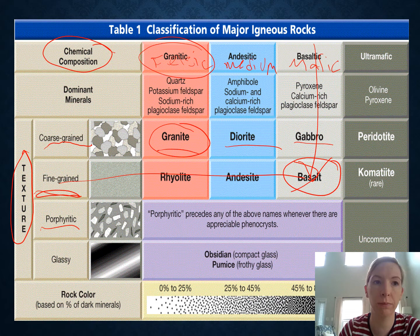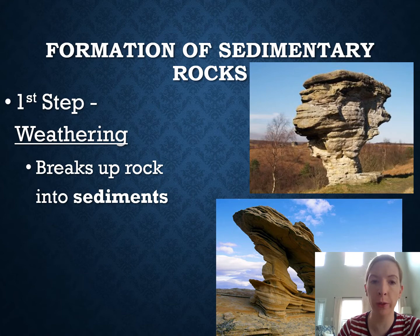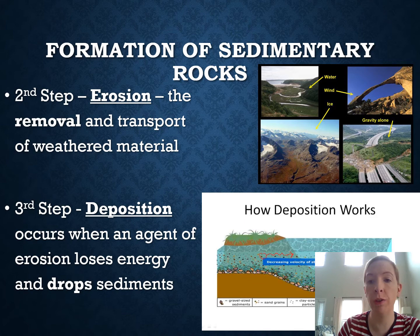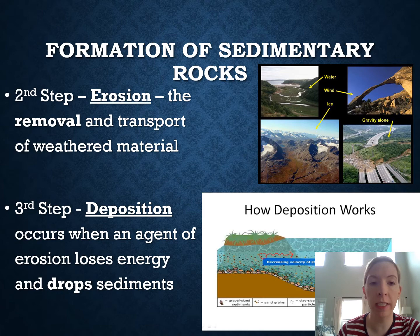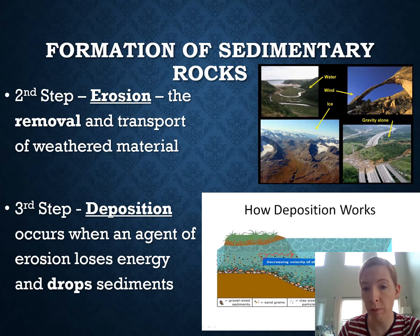Now let's look at sedimentary rocks. The first step in sedimentary rock formation is weathering — the breakup of solid rock into smaller pieces called sediments. Then comes erosion: the transport of those pieces by water, wind, ice, or gravity. The last step shown here is deposition, where the sediments settle down and are dropped by whatever agent of erosion was carrying them. Water does an excellent job sorting sediments by size as it loses energy.